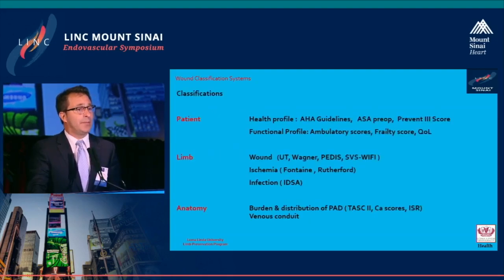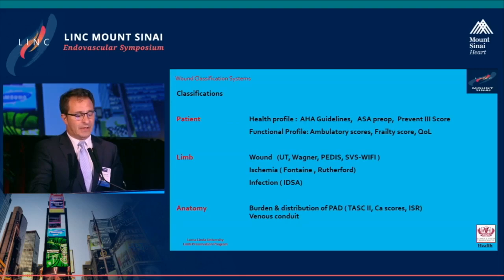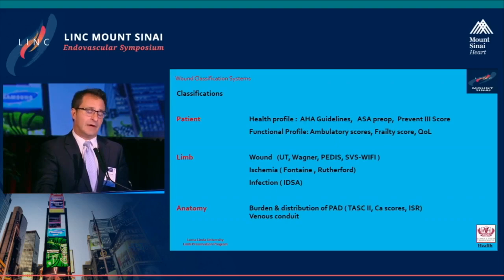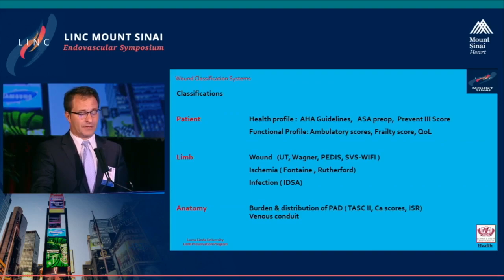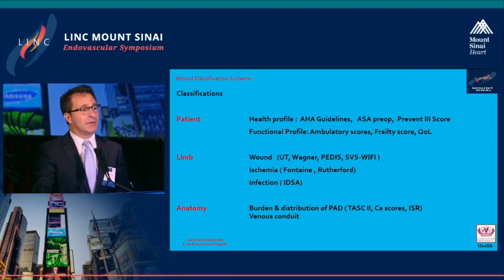Classifications for the patient dimension include the AHA, the ASA pre-op classification, and the PREVENT-3 trial scores. Functional profiles include ambulatory scores, the Frehley scores, and quality-of-life tools used to evaluate patients. From the wound perspective, which is the topic of this talk, there are many classifications, and I'll discuss some of them along with others for the anatomic burden.